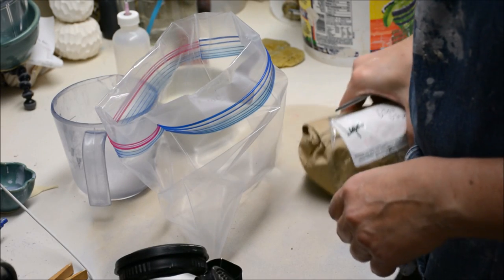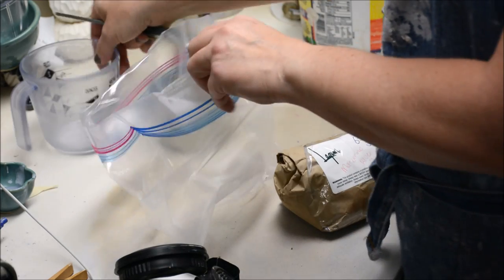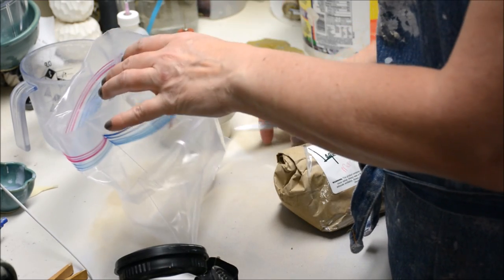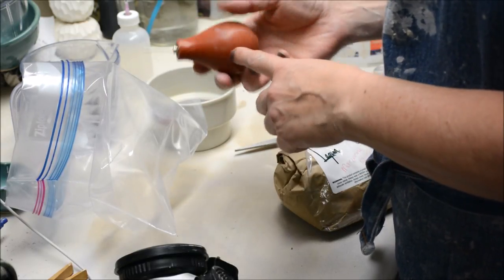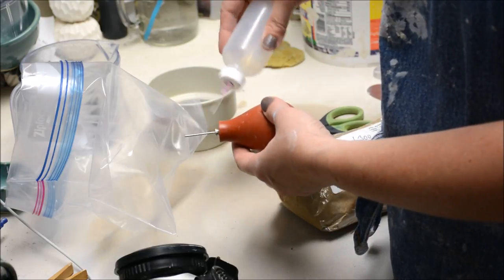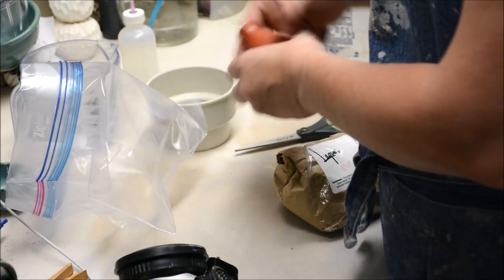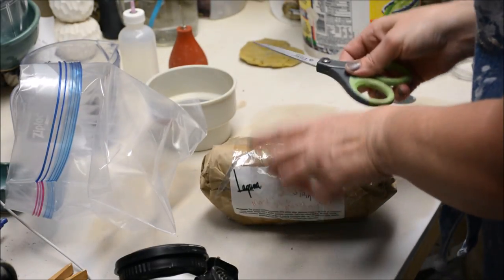I'm going to mix up some colored slip. I use colored slip for a couple of different things. You could use colored slip for slip trailing if you wanted to put some in a bulb syringe or a squeezy bottle. You could trail it, or what I'm going to be using it for is coloring a clay body.